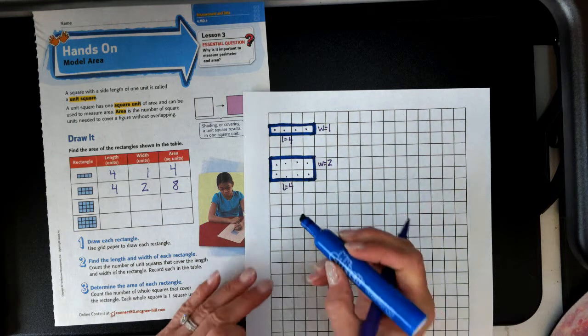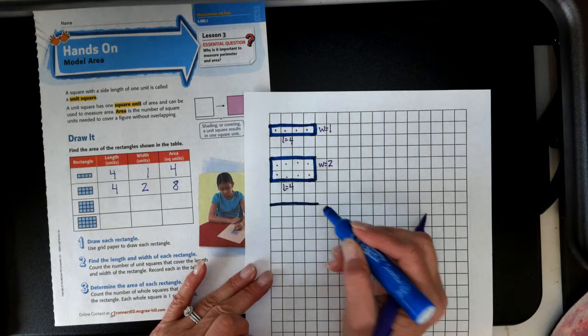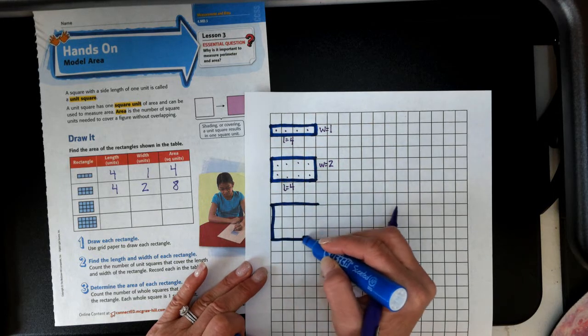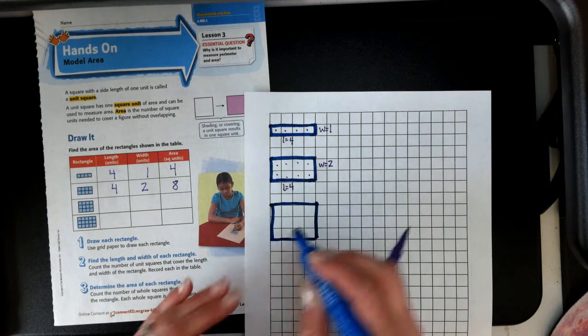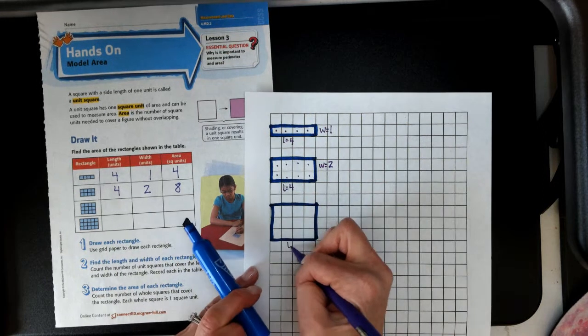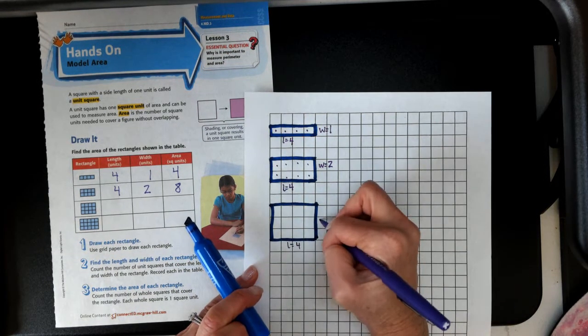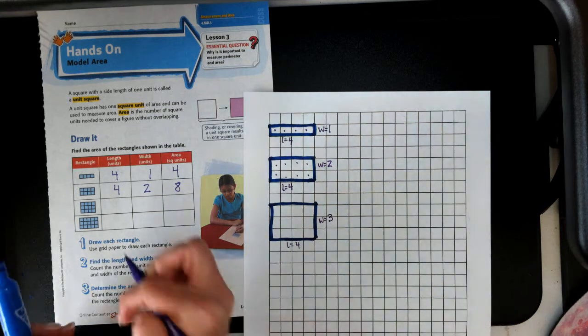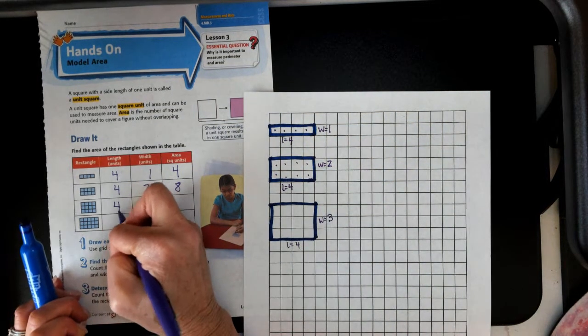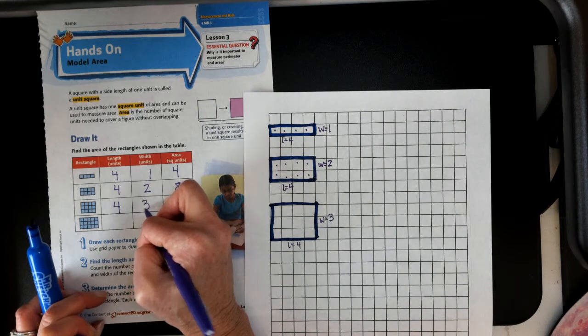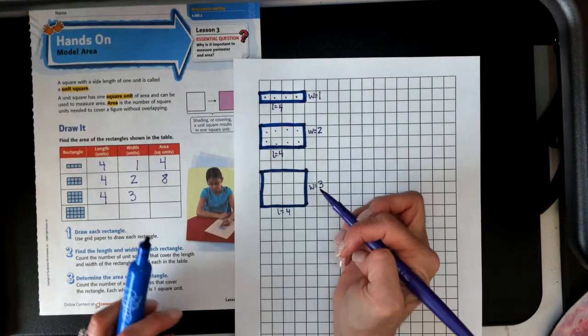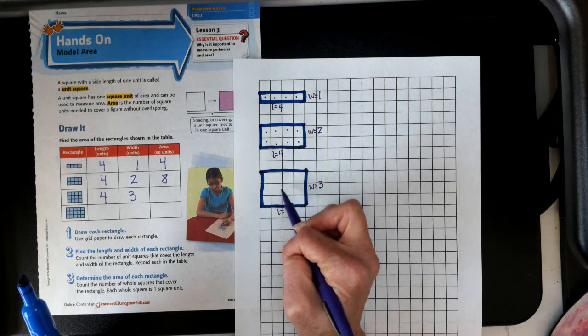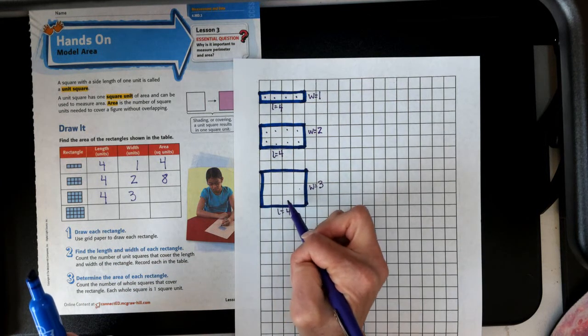We're going to keep building, and we're still going with the width of four, but this time we're going three deep. My width, or length is going to remain four, but my width went up to three. Four, three, and what is my total number of units now? One, two, three, four, five, six, seven, eight, nine, ten, eleven, twelve.